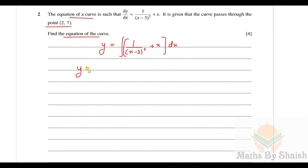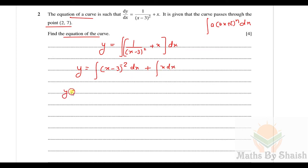We convert 1/(x−3)² to (x−3)^(−2) and integrate: y = ∫(x−3)^(−2) dx + ∫x dx. Using the power rule, the integration gives y = (x−3)^(−1) / (−1) + x²/2 + C, which simplifies to y = −1/(x−3) + x²/2 + C. We always include the constant of integration.